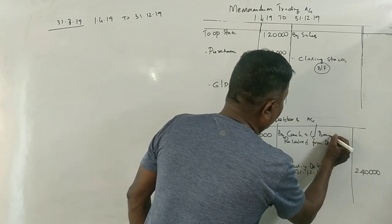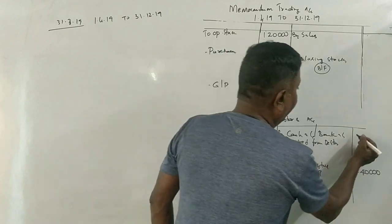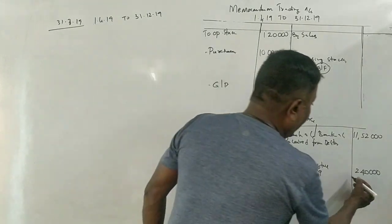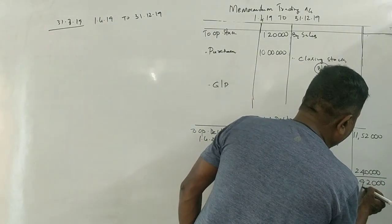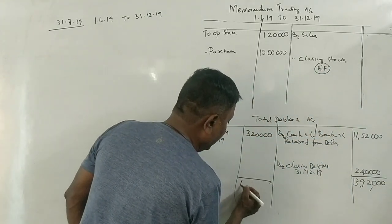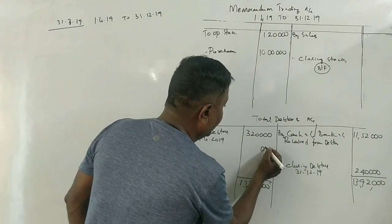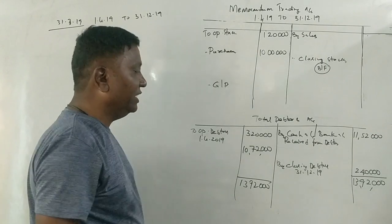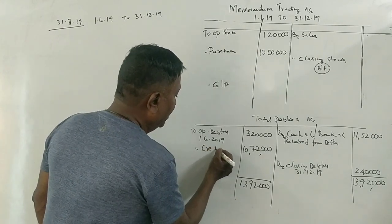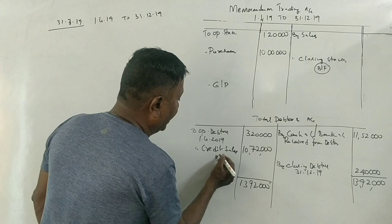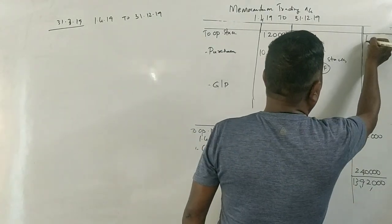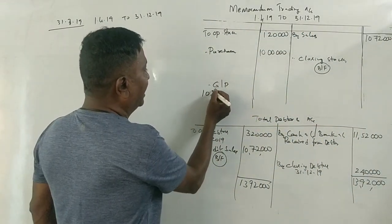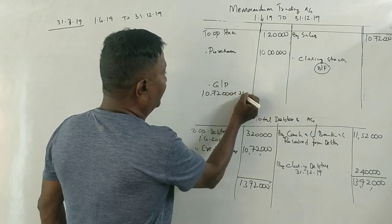That's why you received 11,52,000 rupees by cash account, received from debtors. The cash received is 11,52,000 rupees. And how much are sales? Credit sales. That one is 11,12,000 rupees. The gross profit is 25%.